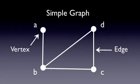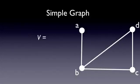We can call the set of vertices V. So here the set V contains vertices A, B, C, and D.